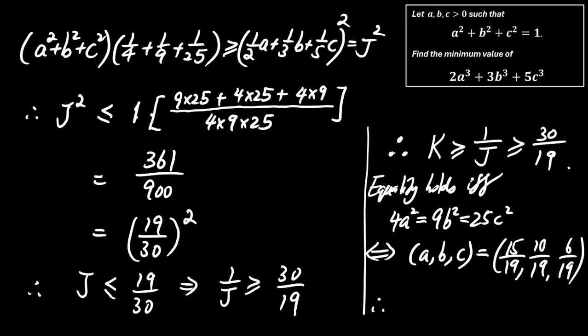Plugging these back into the original expression confirms that the minimum value of 2a cubed plus 3b cubed plus 5c cubed is exactly 30 over 19. So the final answer is minimum value equals 30 over 19.